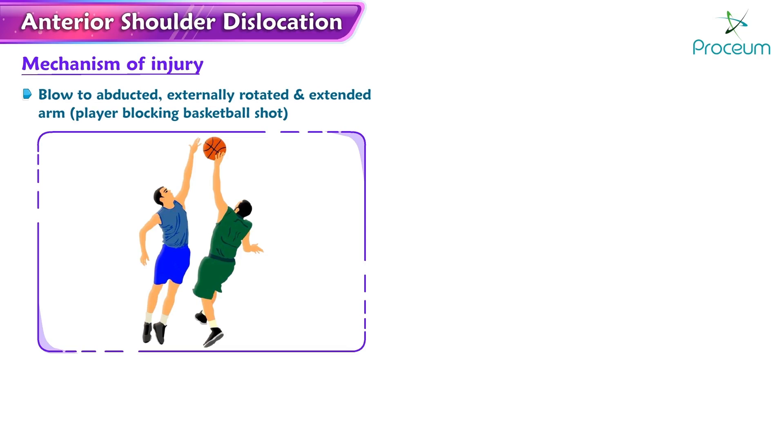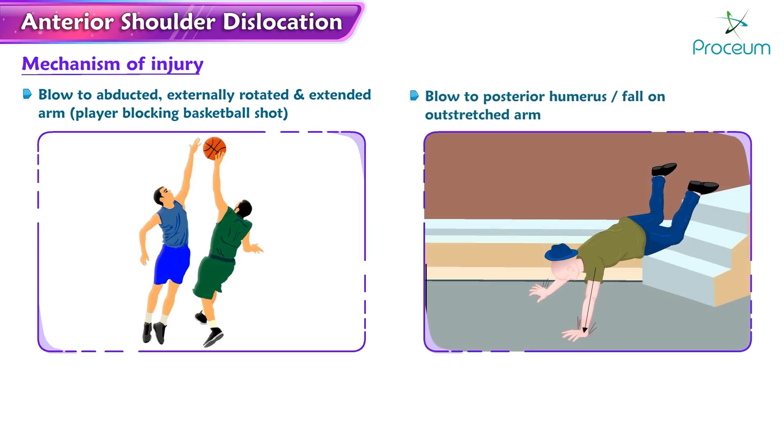Additionally, a blow to the posterior humerus or a fall on an outstretched arm can also result in an anterior shoulder dislocation.